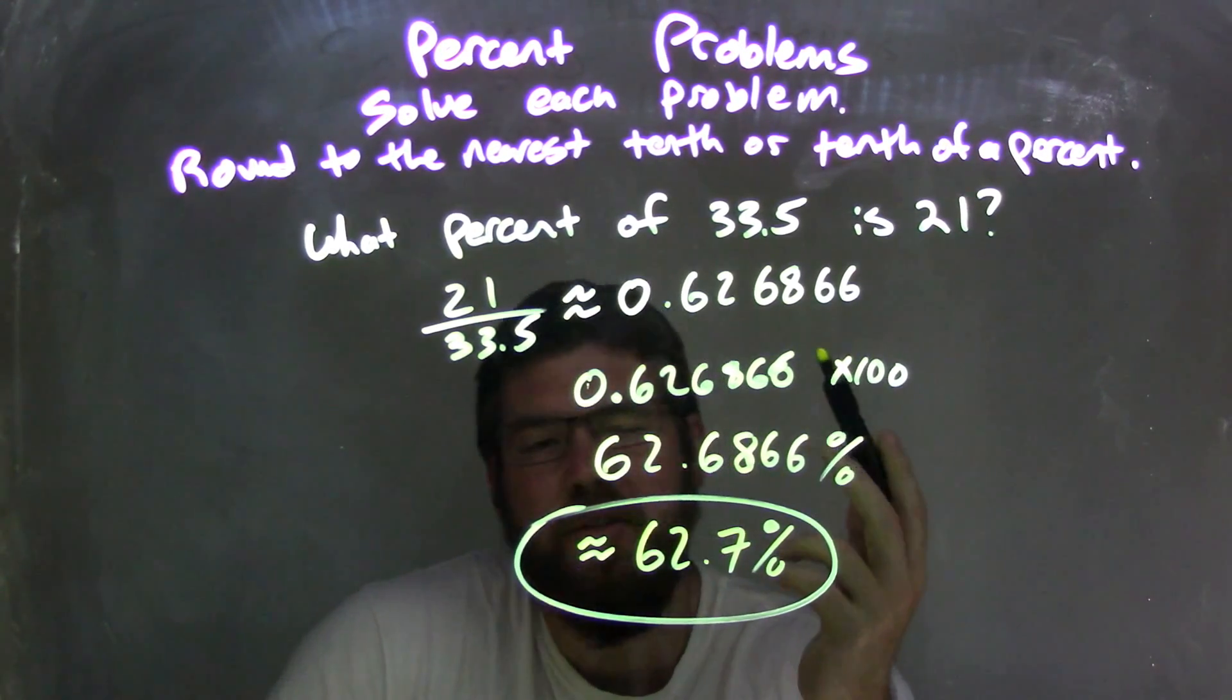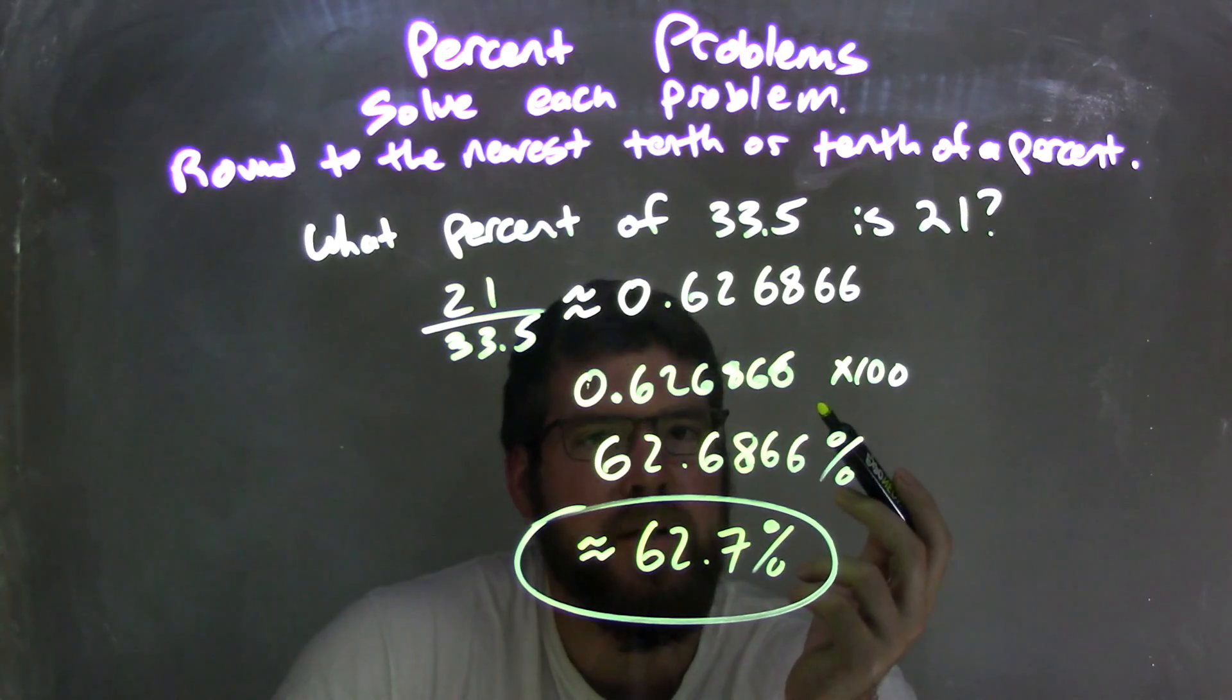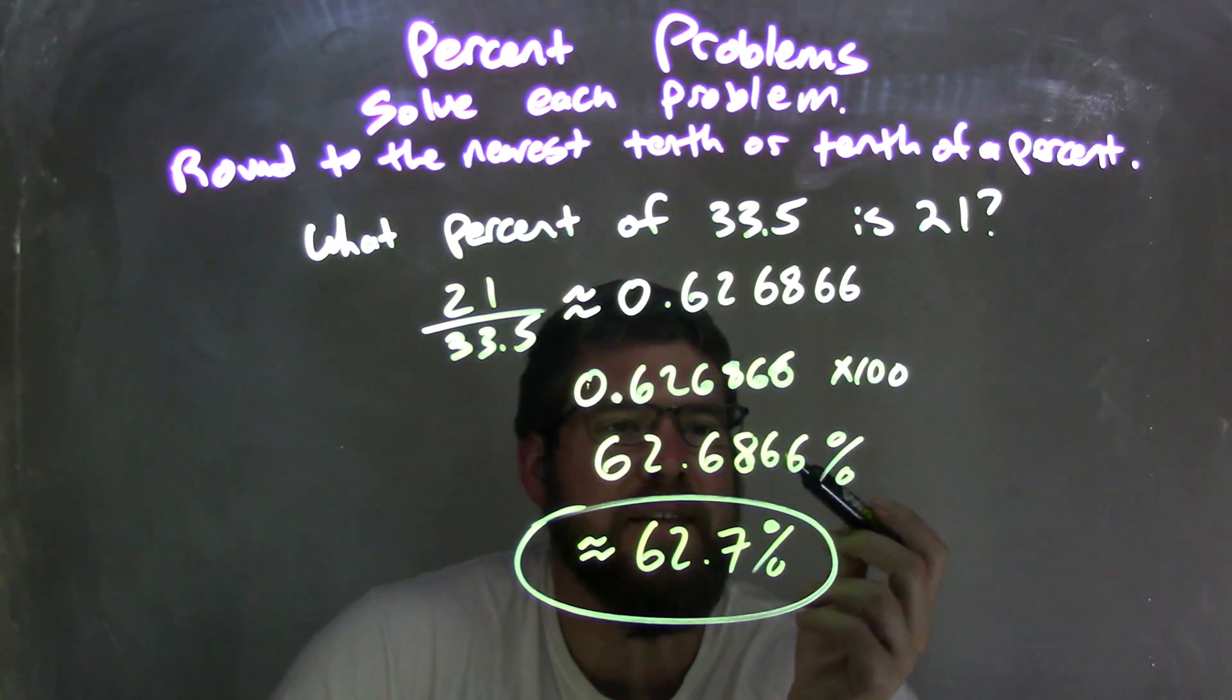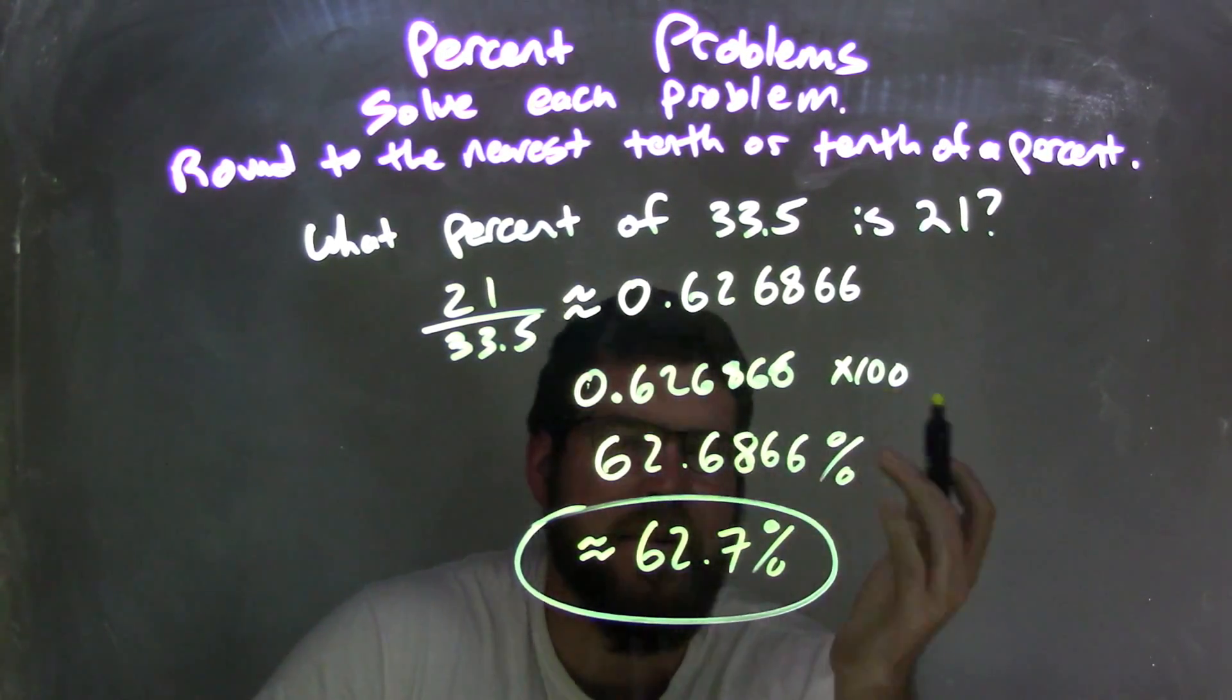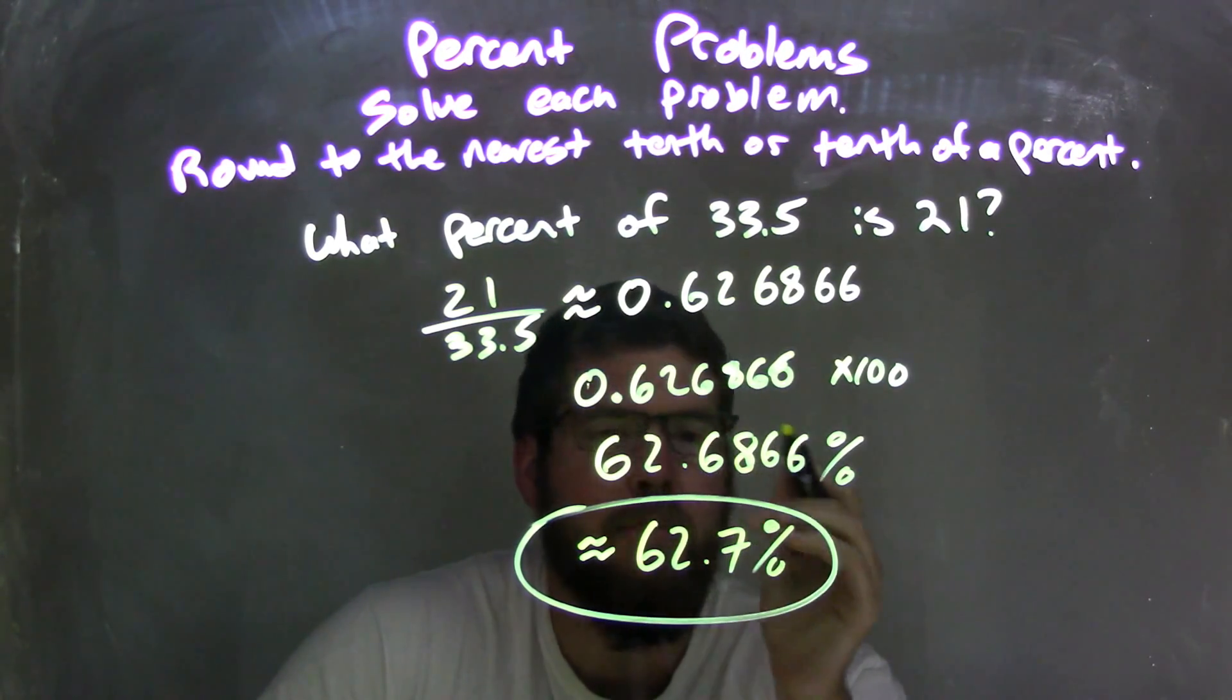That gave me this decimal. I then took that decimal and multiplied it by 100 to get 62.6866. That decimal was rounded. The calculator kept on going. Eventually, it stopped around at whatever point I stopped at.